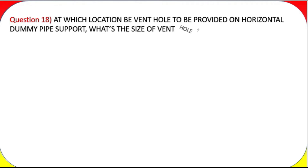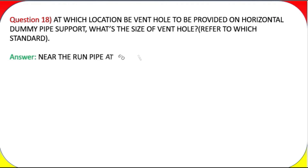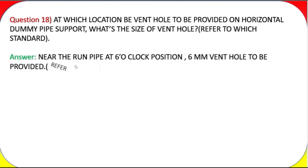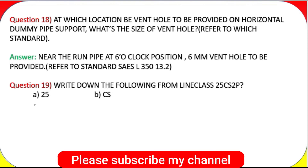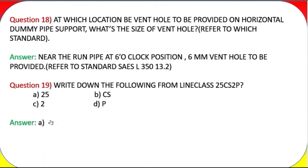Question 18: At which location should a vent hole be provided on a horizontal dummy pipe support? What is the size of the vent hole and which standard does it refer to? Answer: Near the run pipe at the 6 o'clock position. A 6-millimeter vent hole to be provided. Refer to standard SAES-L-350, Section 13.2.